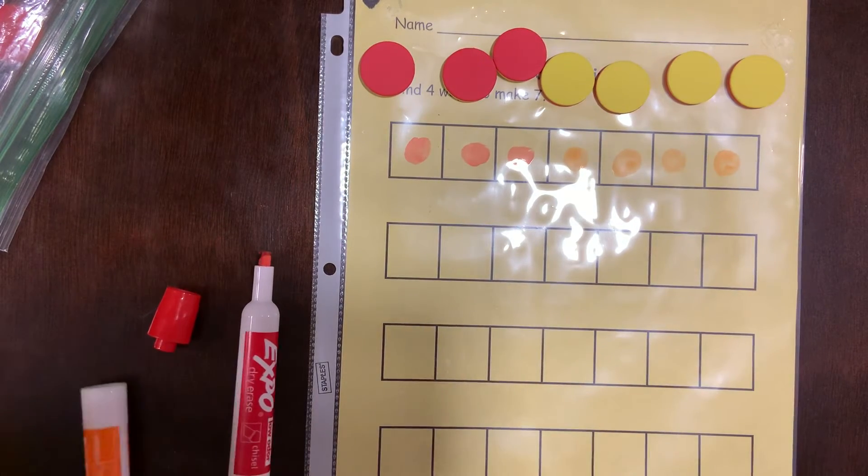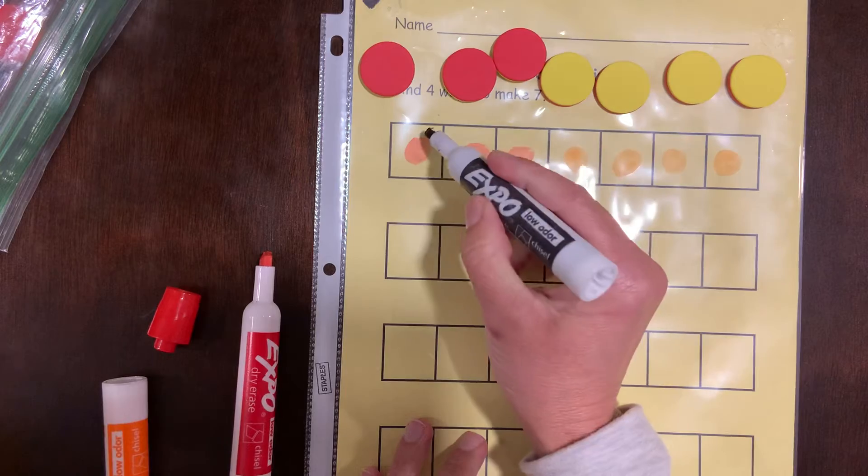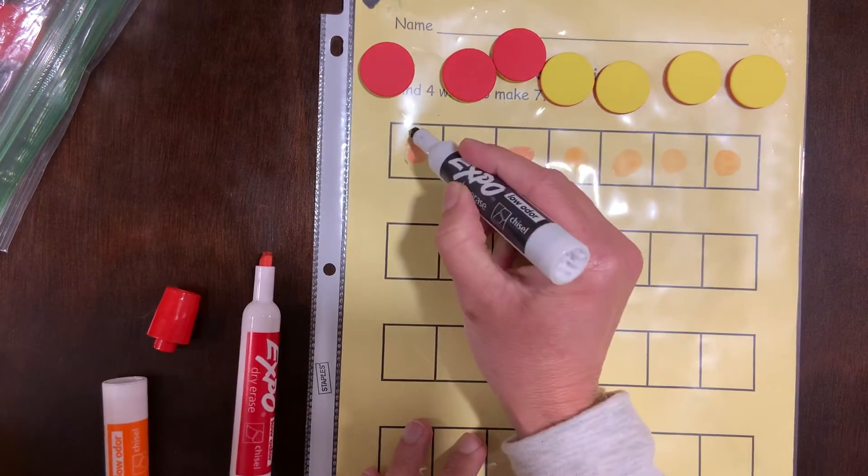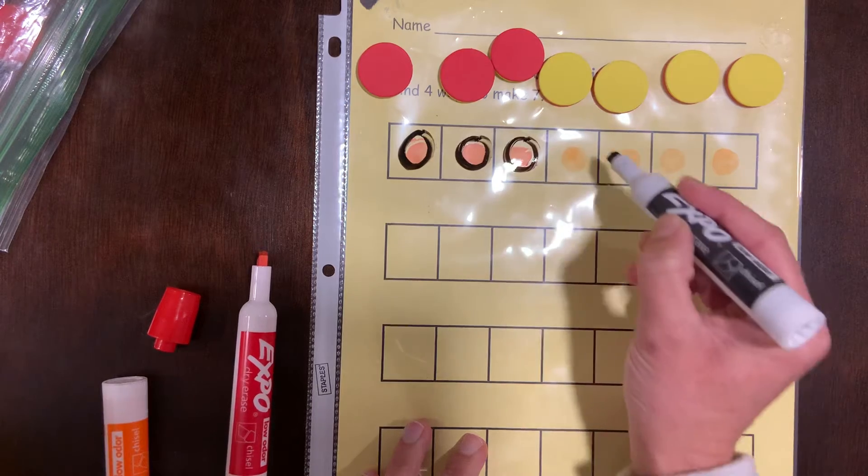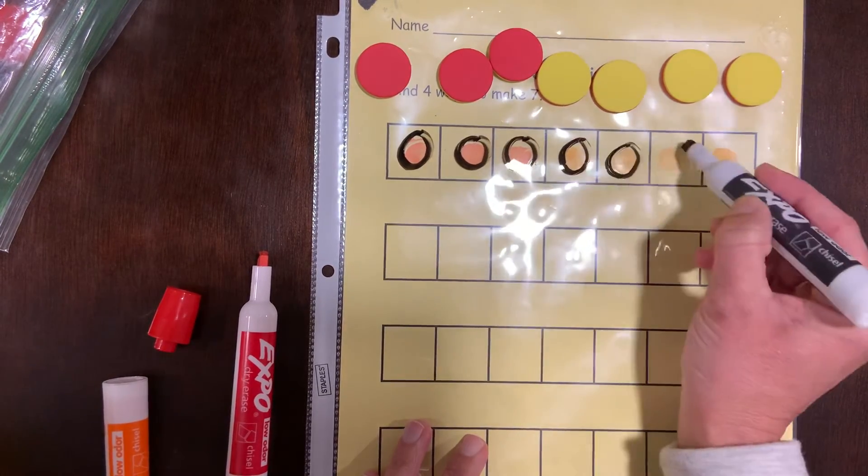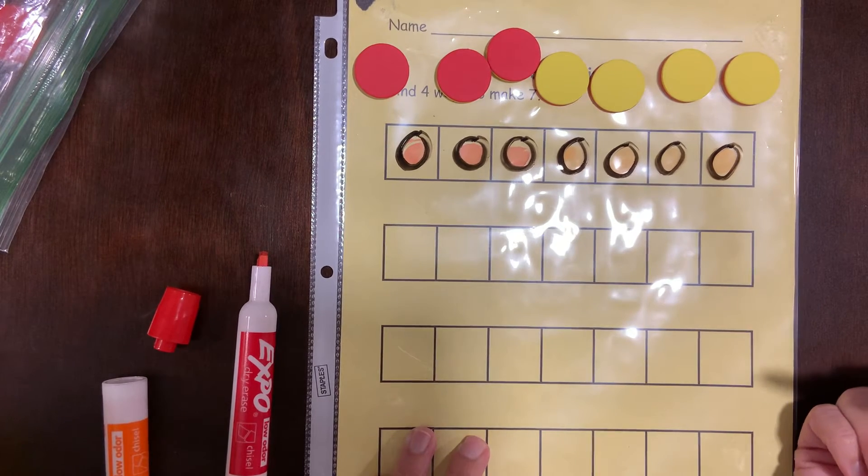And I realize that may still be a little tricky for some kids to see, so let me just outline them quick. So again, we did our one, two, three reds and one, two, three, four yellows. And that makes a total of seven.